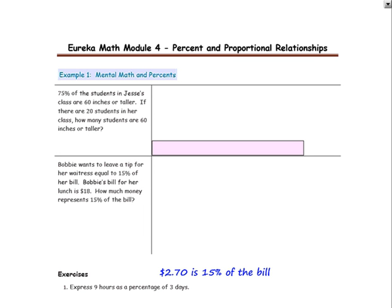Mental math and percent example one. 75% of the students in Jessie's class are 60 inches or taller. If there are 20 students in her class, how many students are 60 inches or taller? I'm going to solve this problem a little differently.